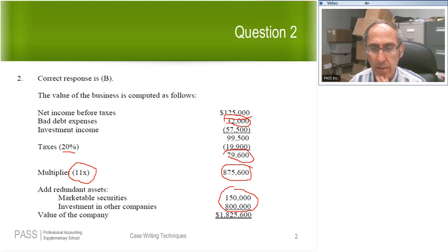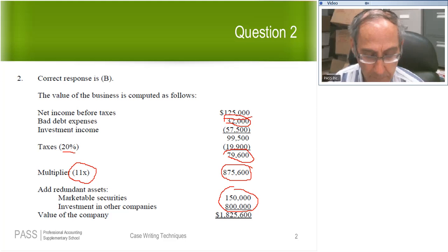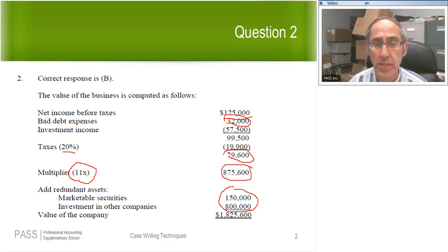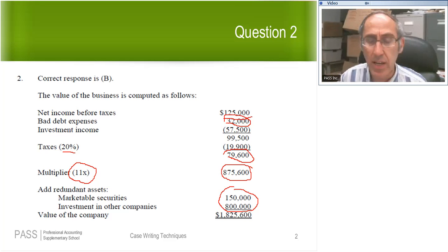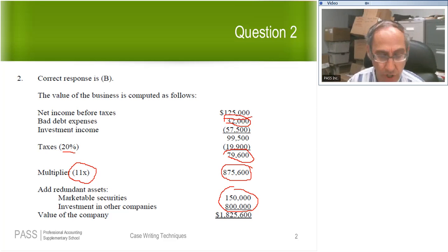The next question, question number three, do we have any takers? Can somebody give me an answer for question three, even possibly with an explanation? Okay, somebody said C. Why did you choose C, Emery? Any particular reason? Either you can speak up or you just send me a chat if you don't mind. Do you have a reason for choosing it? Emery says because of the cyclical earnings. Okay, excellent.